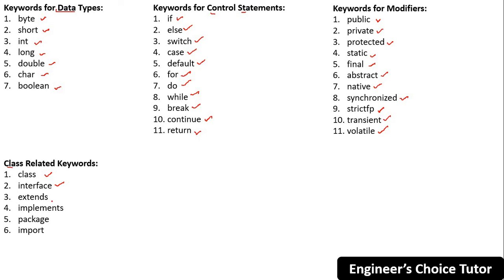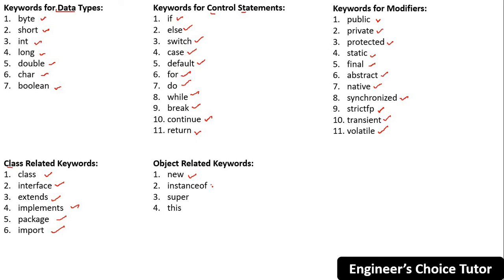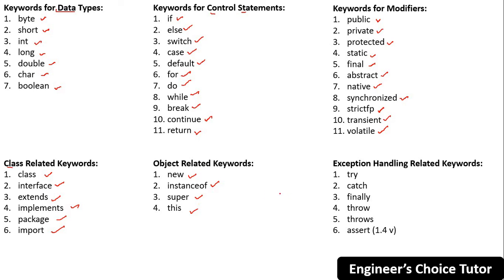We have a few class-related keywords: class, interface, extends, implements, package, and import. We also have object-related keywords: new, instanceof, super, and this.